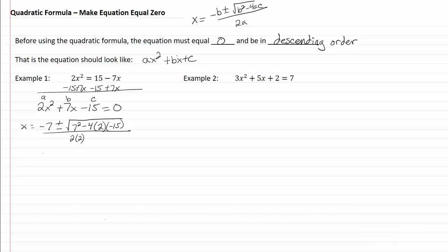Let's start simplifying here. We get negative 7 plus or minus the square root of 49. Negative times a negative is going to be plus, so we've got 60, 120 there all over 4.